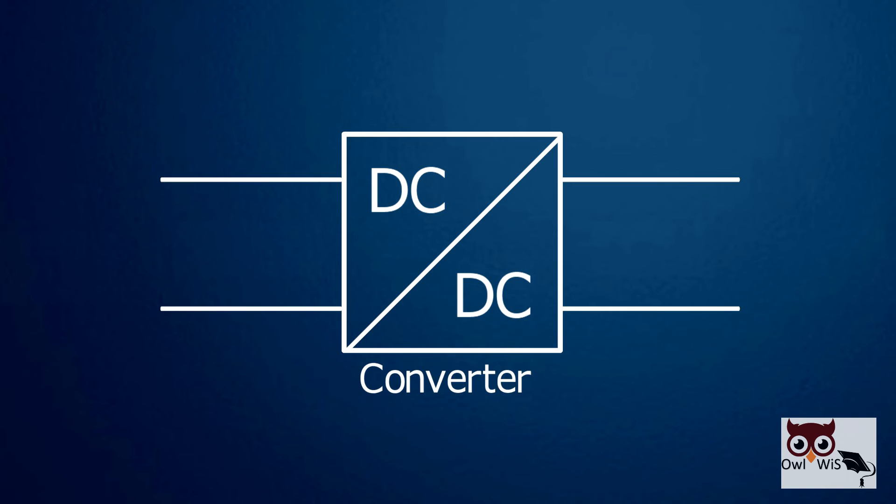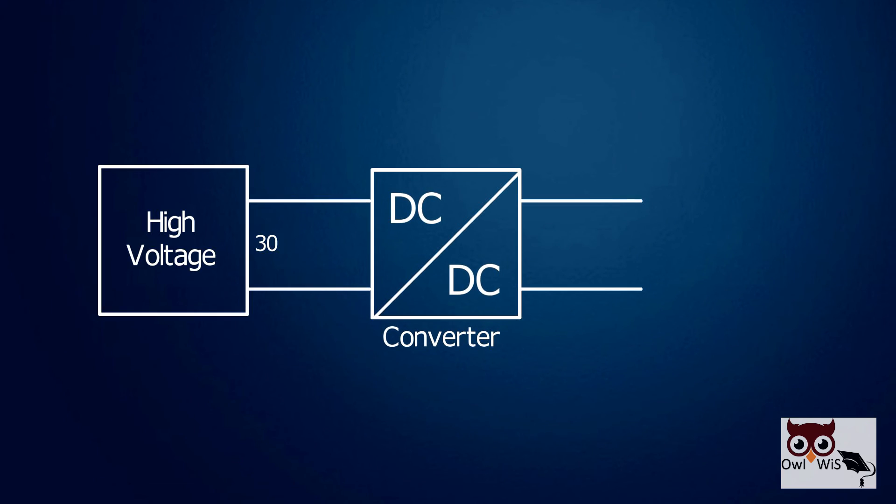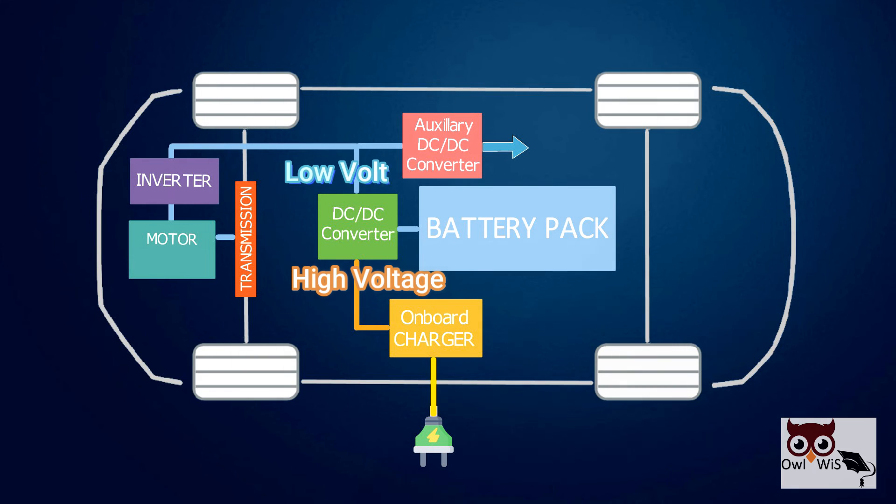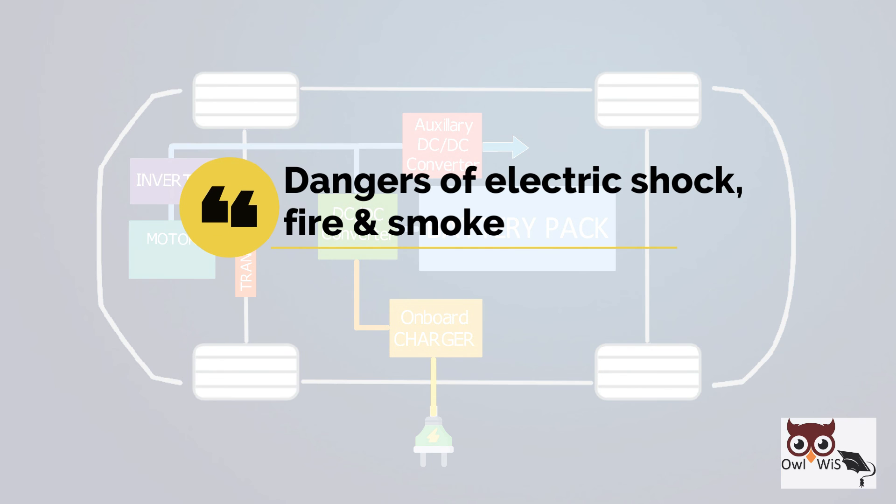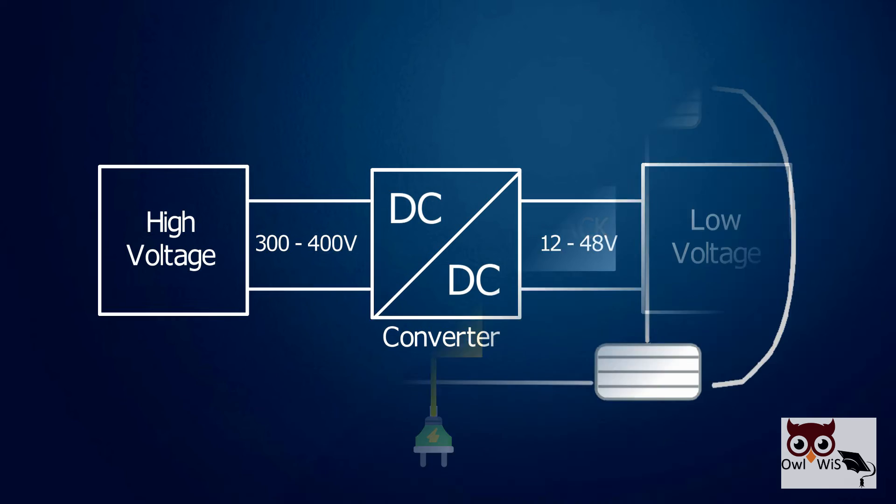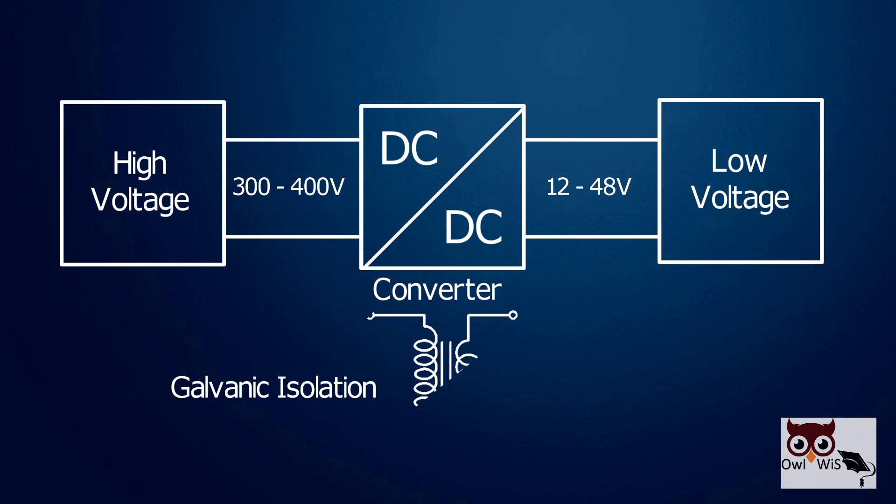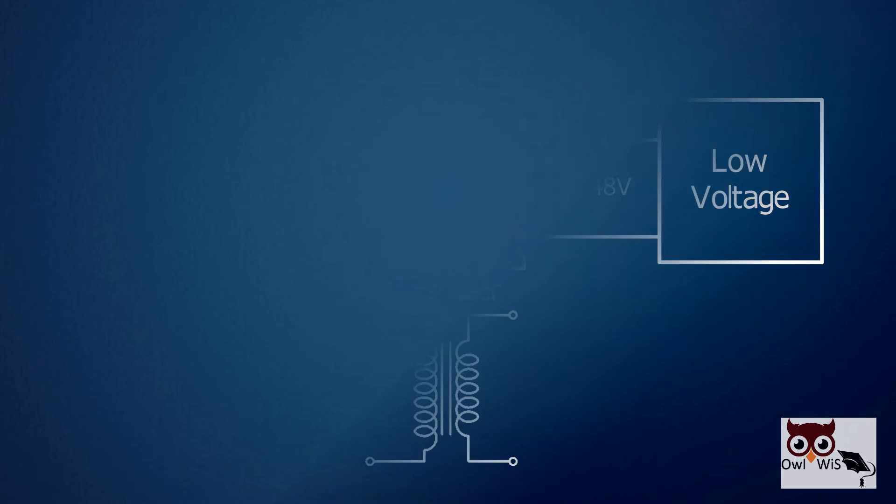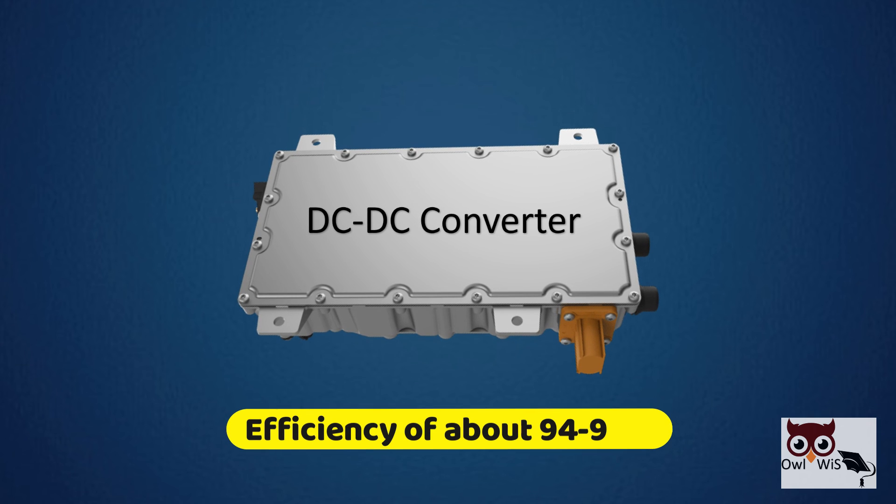DC-DC converters convert electrical power between high and low voltages. They are the points at which the high voltage and low voltage circuits come into close proximity. For safety reasons, mainly to avert the dangers of electric shock, fire and smoke, the converters use galvanic isolation with a high frequency transformer. Modern DC-DC converters typically have an efficiency of about 94-95%.